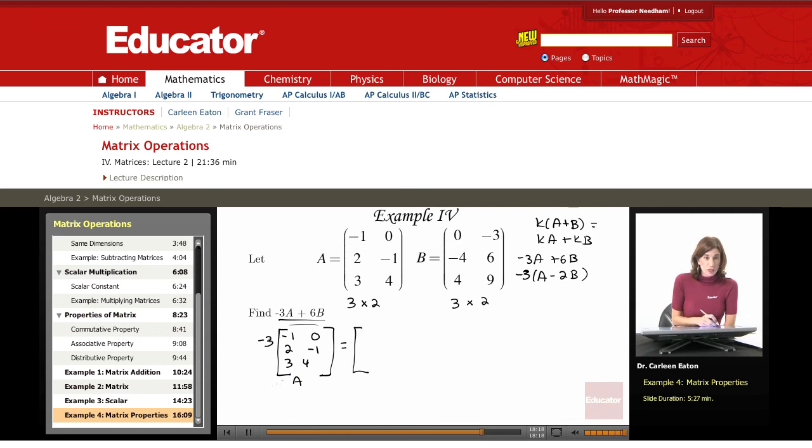Recall that all we're going to do is multiply each element of the matrix by the scalar. And that will give me negative 3 here. Negative 3 times 0 is 0. Negative 3 times 2 is negative 6. Negative 3 times negative 1 is 3.